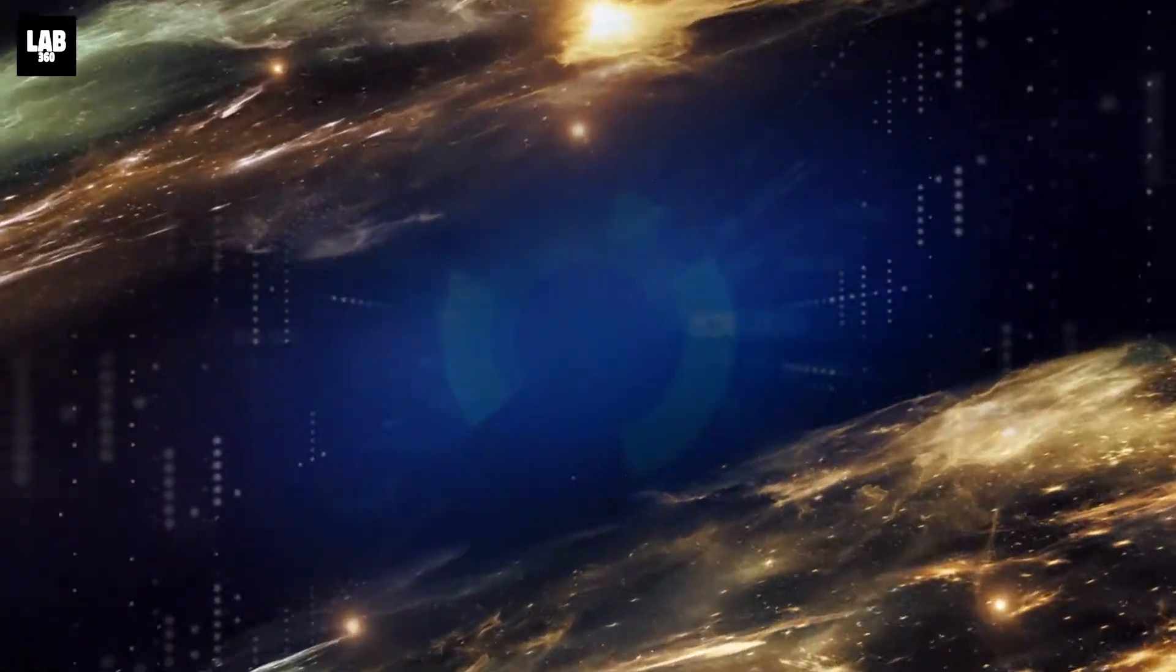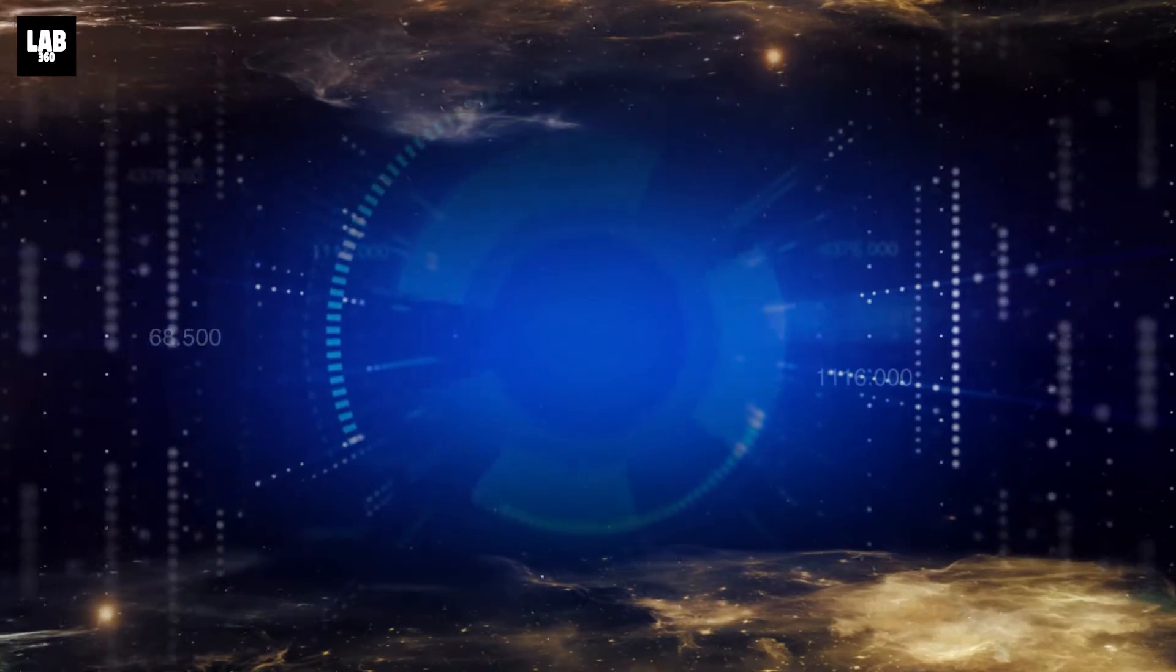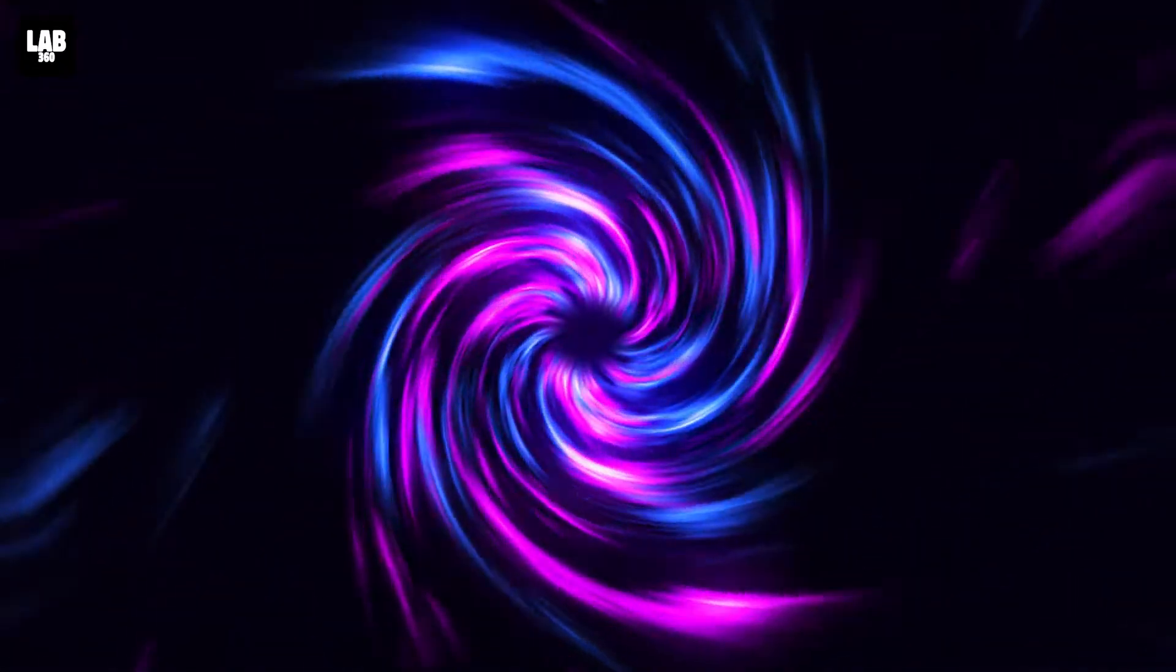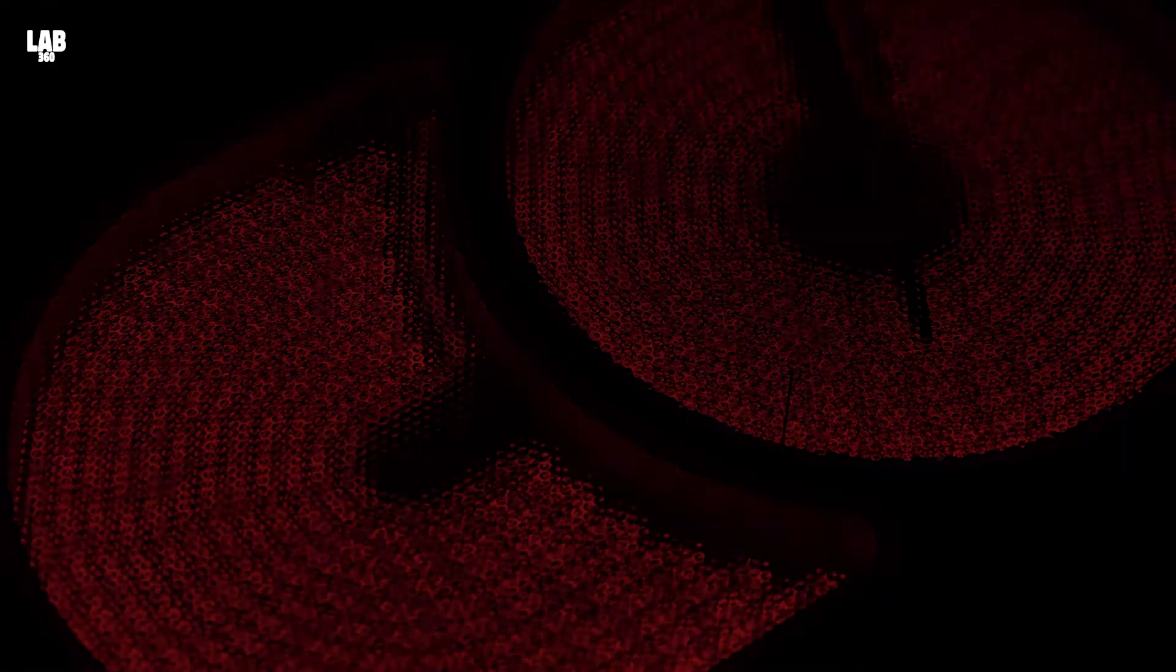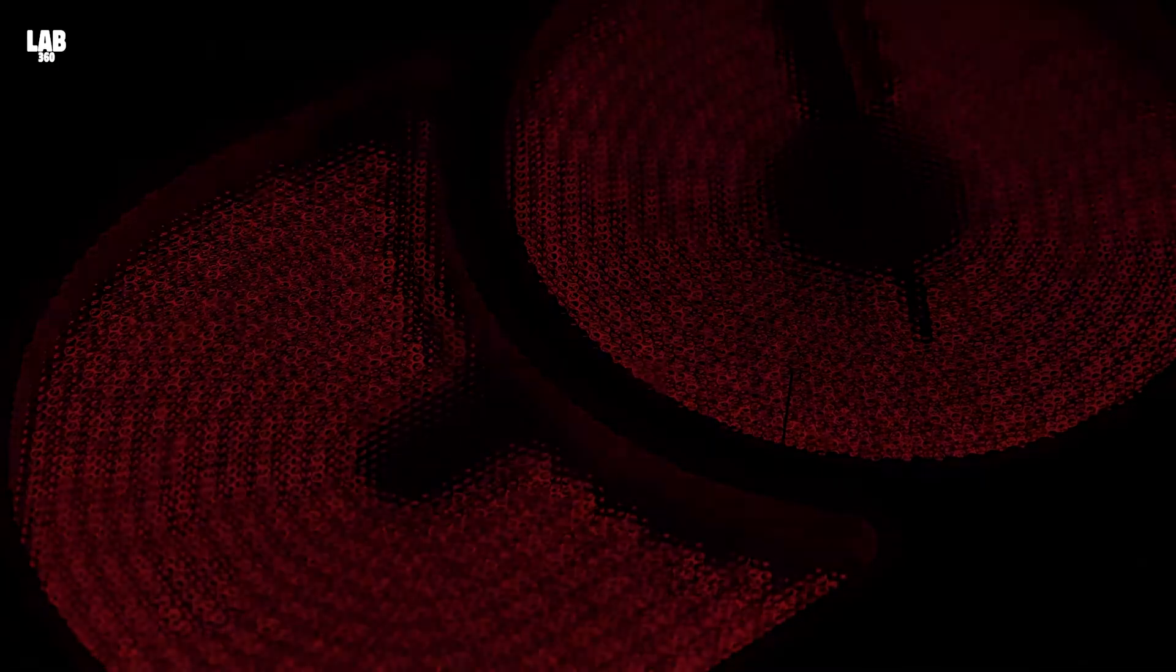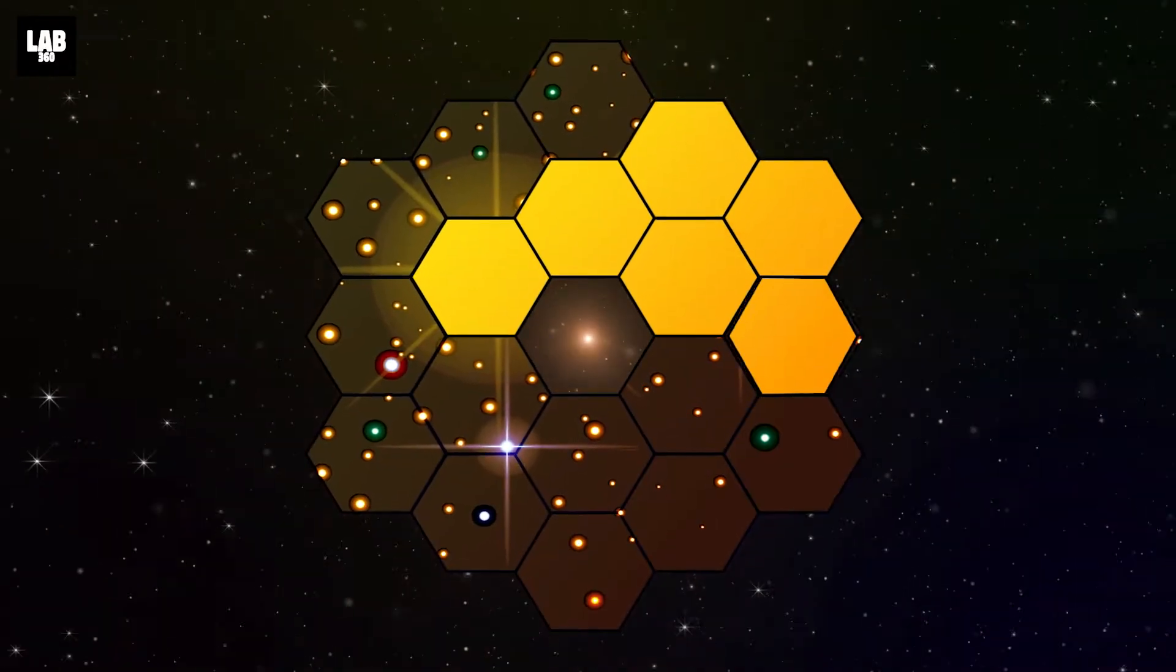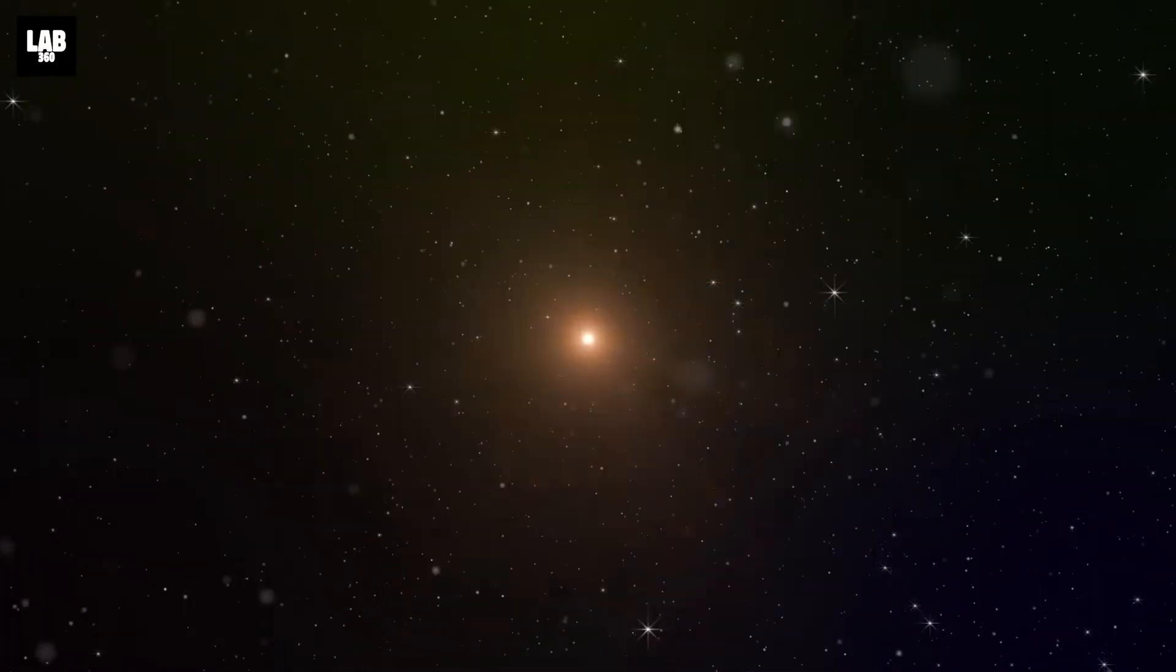Time to get a bit technical. The Hubble detects light at an optical and ultraviolet wavelength, while the JWST detects light at infrared wavelengths. It's no surprise that the JWST has a bigger mirror than the Hubble.